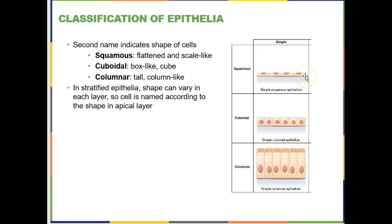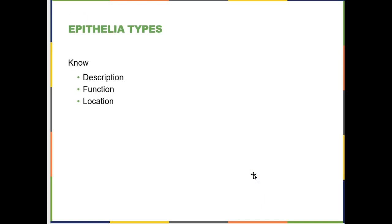You start with whether an epithelium is simple or stratified. Simple means one cell layer; stratified means many cell layers. Then you indicate the shape of the cell: squamous cells are flat, cuboidal cells are cube-shaped or square, and columnar cells tend to be tall like skyscraper apartment buildings. You put the two together to name the epithelia type. For each type you want to know its description, its function, and the location or an example of where you would find that type of epithelia in the body.